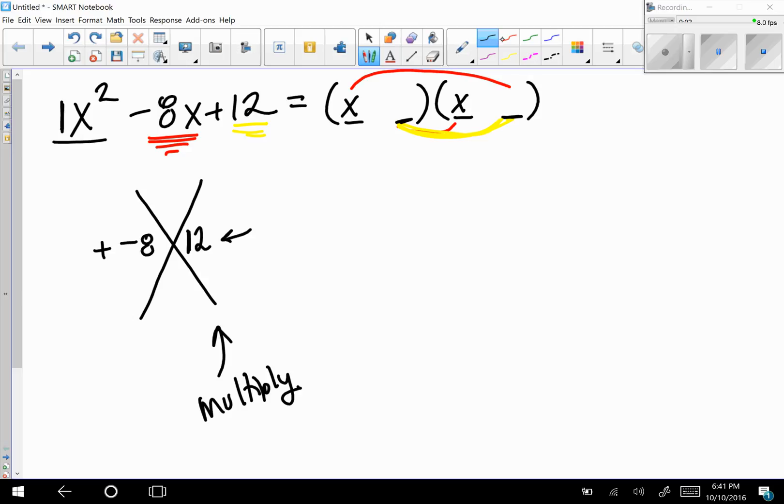These little sections are what we're trying to find - the missing values, the terms in each of our binomials. We're looking for two numbers that multiply together to give us 12 but add together to give us negative 8.